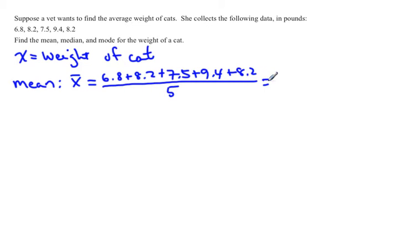When I add those numbers up, I will get 40.1, and we'll divide that by five. And that gives us a mean of 8.02. Don't forget the units. Since all of these are in pounds, this is also in pounds.